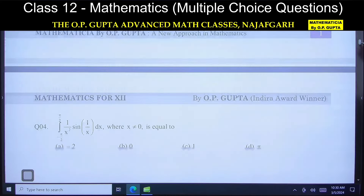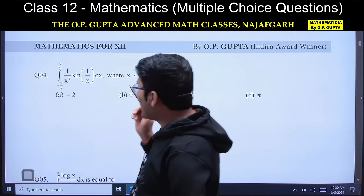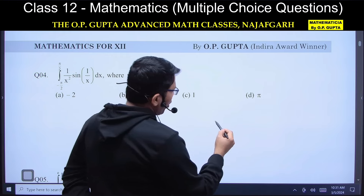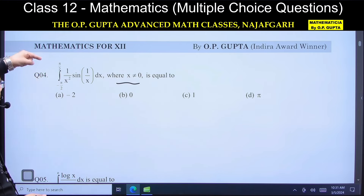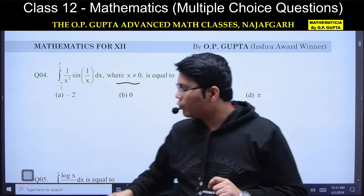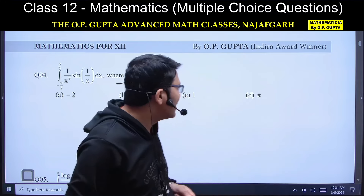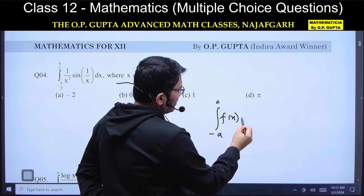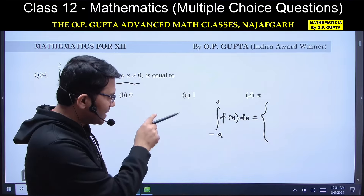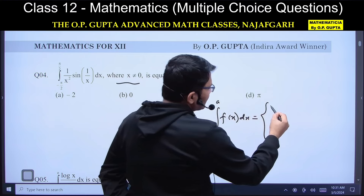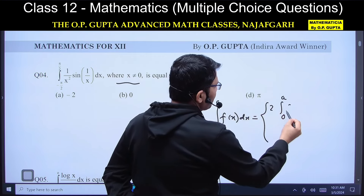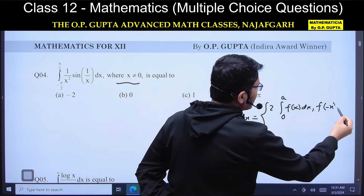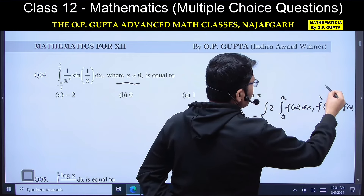Next question, question number 4. इस integral की value निकालनी है, x पर condition दे रखी है। Lower limit और upper limit का magnitude same है, lower limit negative है। तो even/odd function वाली property use होगी। Property लिख देता हूँ: अगर function even है तो integral का answer 2 times ∫₀ᵃ f(x)dx होगा, even function के लिए condition है f(−x) = f(x)।